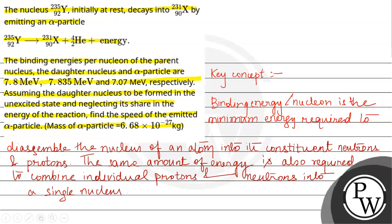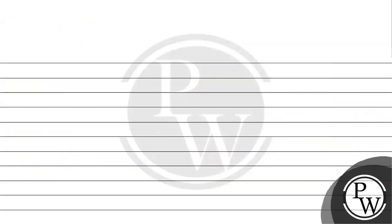With the help of this key concept, we will proceed further. So the energy released will be equal to mass of 231-X plus mass of helium-4 minus mass of 235-Y.